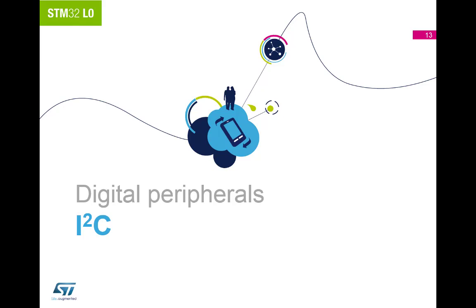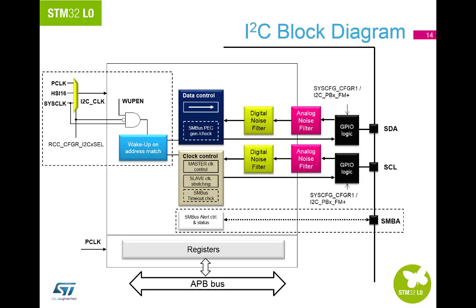The second communication peripheral to wake the device from stop mode is the I2C. Looking at the block diagram of the I2C peripheral, the main change to the peripheral is the addition of the wake-up block. This block is only present in I2C1 for variants that have more than one cell. We have also added an independent clock source to the I2C cell so that frequency changes on the APB have no impact on the peripheral.